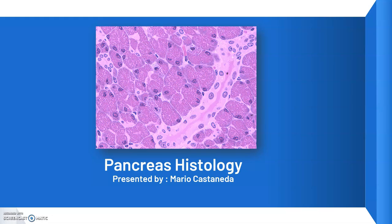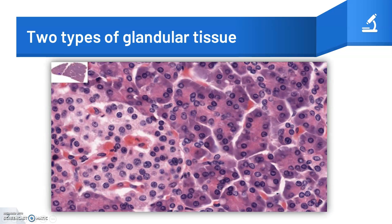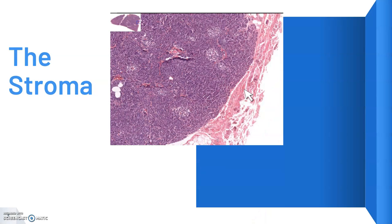Welcome to a video session review of the pancreas histology. The pancreas contains two different types of glandular tissue: it has an exocrine component which constitutes 98% of the pancreas, and an endocrine component which represents 2% of the glandular tissue. Both of them allow the organ to perform two different functions.